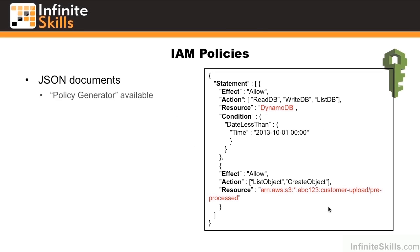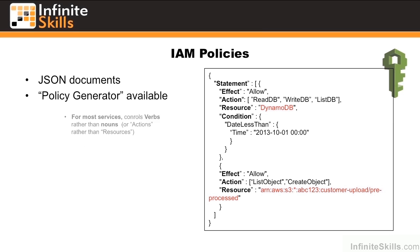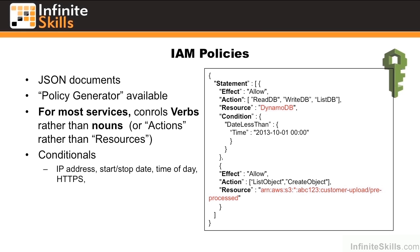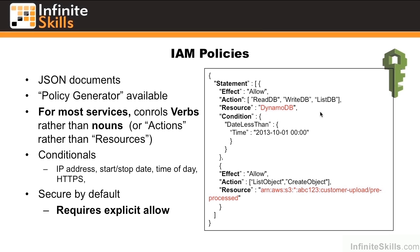IAM policies are JSON documents. There's also a policy generator available, which helps in the creation of these documents. For most services, IAM controls the verbs rather than the nouns, or the actions rather than the resources. Inside of the policy, you can specify conditionals such as IP address, a certain start or stop date, the time of day, HTTPS required, and so forth. It's secure by default and requires an explicit allow to be present in the policy. Note that what follows is a simplified pseudo-policy to help you understand the gist of it.